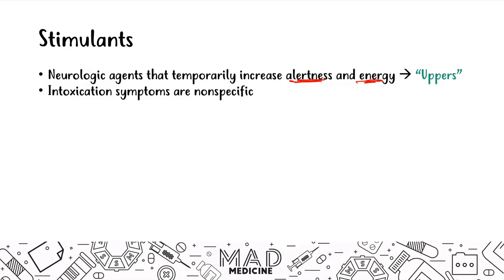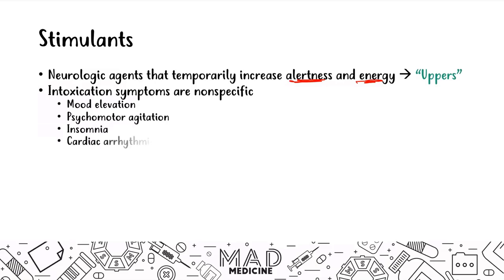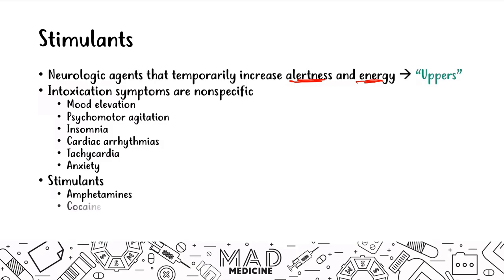The symptoms of stimulant intoxication are going to be mood elevation, psychomotor agitation, and insomnia. You can also have cardiac arrhythmias like tachycardia, and anxiety because it is a stimulant. There are four stimulants you need to know for Step 1, and we're going to talk about them all in this lecture: amphetamines, cocaine, caffeine, and nicotine.